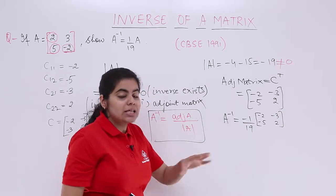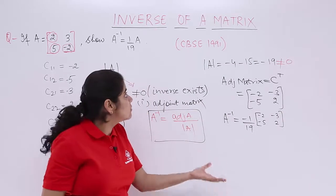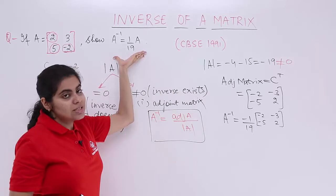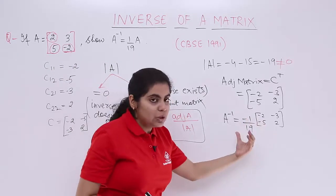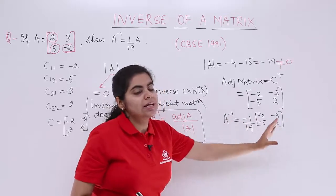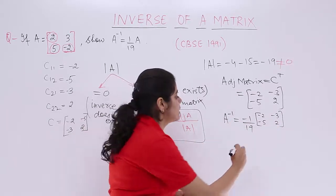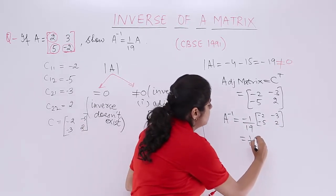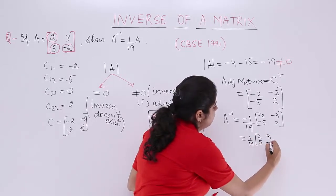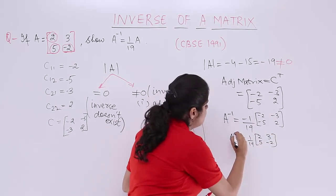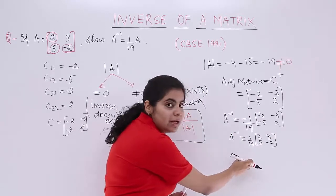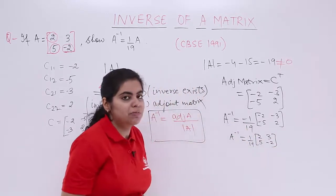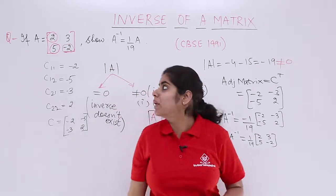But A inverse finding is not the end of the story because we need to prove A inverse equals 1 by 19 A. If we need to prove it equal to 1 by 19, this minus sign can go inside. It becomes 1 by 19, inside is 2, 3, 5, minus 2. A inverse equals 1 by 19 multiplied by 2, 3, 5, minus 2.